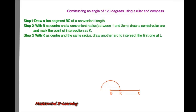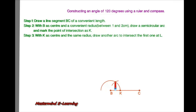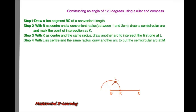With K as center and the same radius, draw another arc to intersect the first one at L. With L as center and the same radius, draw a third arc to cut the semicircular arc at M.